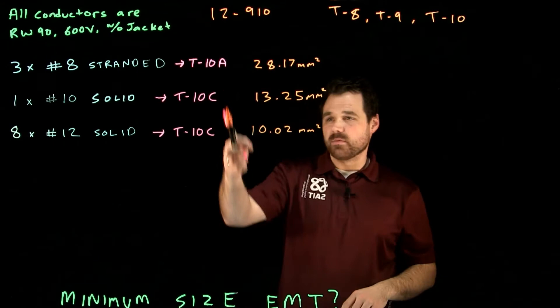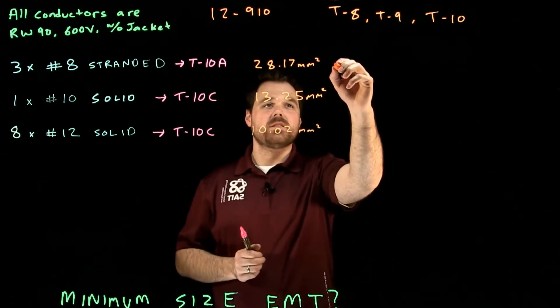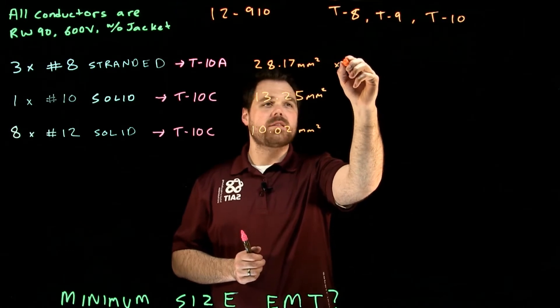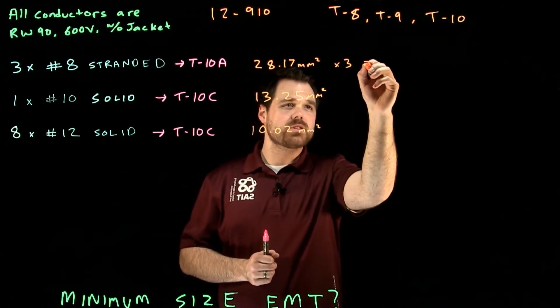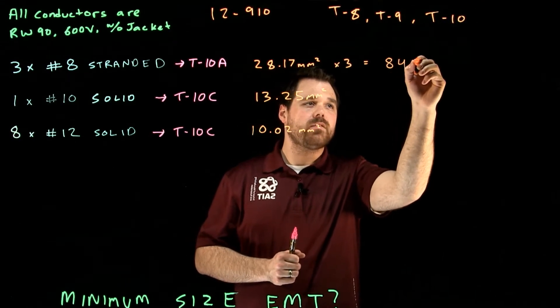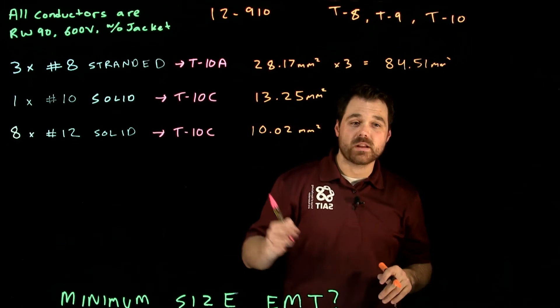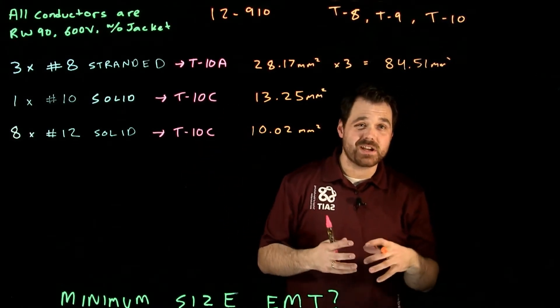So all this information came from table 10. Now what I want to do is I want to take this. I want to multiply this by three because I have three conductors. That's going to give me 84.51 millimeters squared. Now that's how much space my three number 8 strands are going to take up inside a conduit.